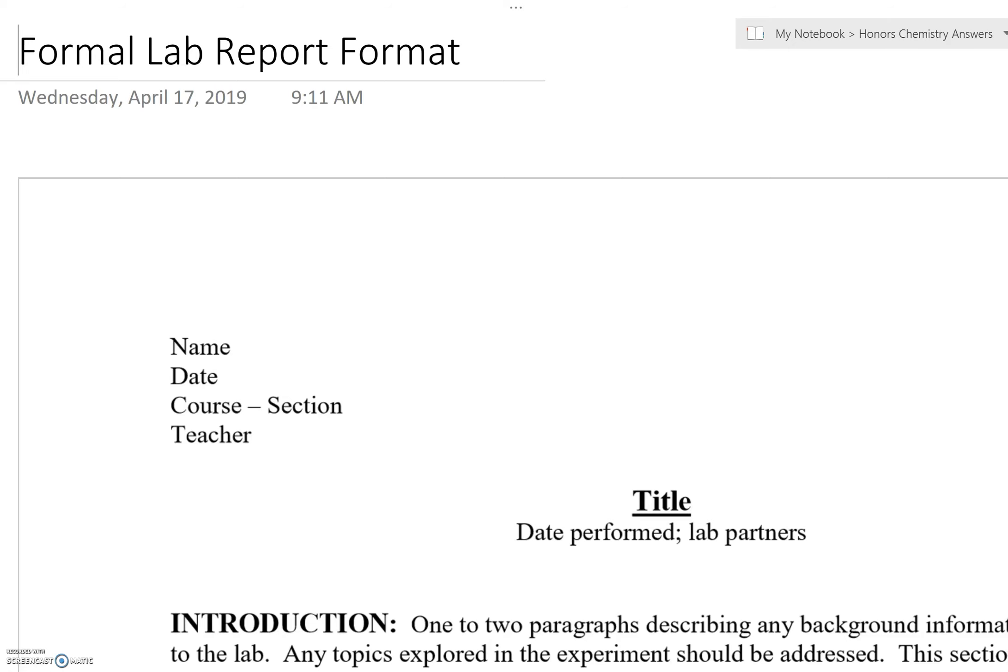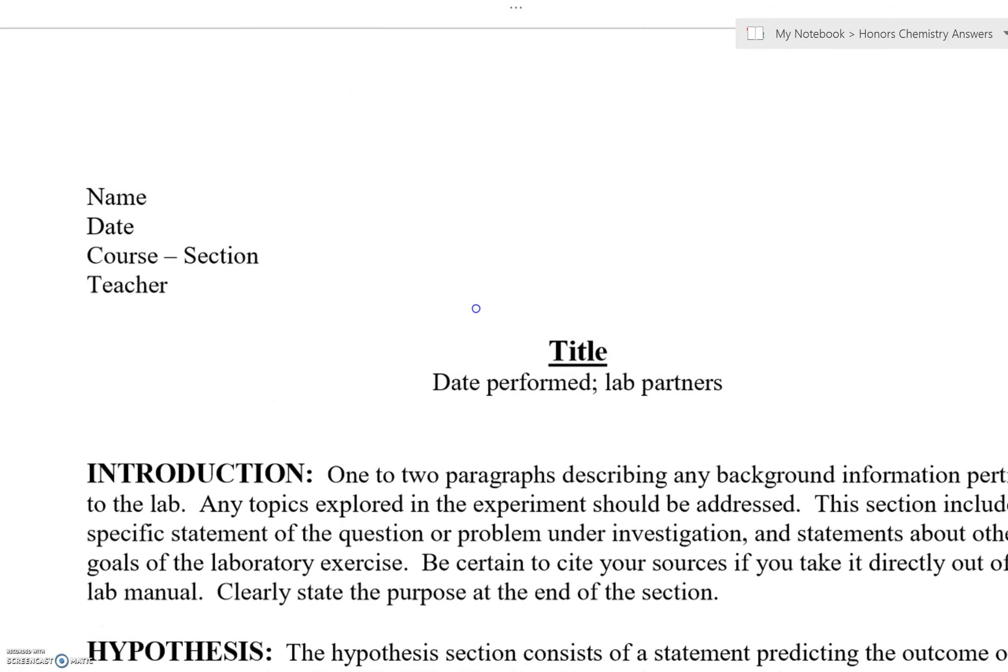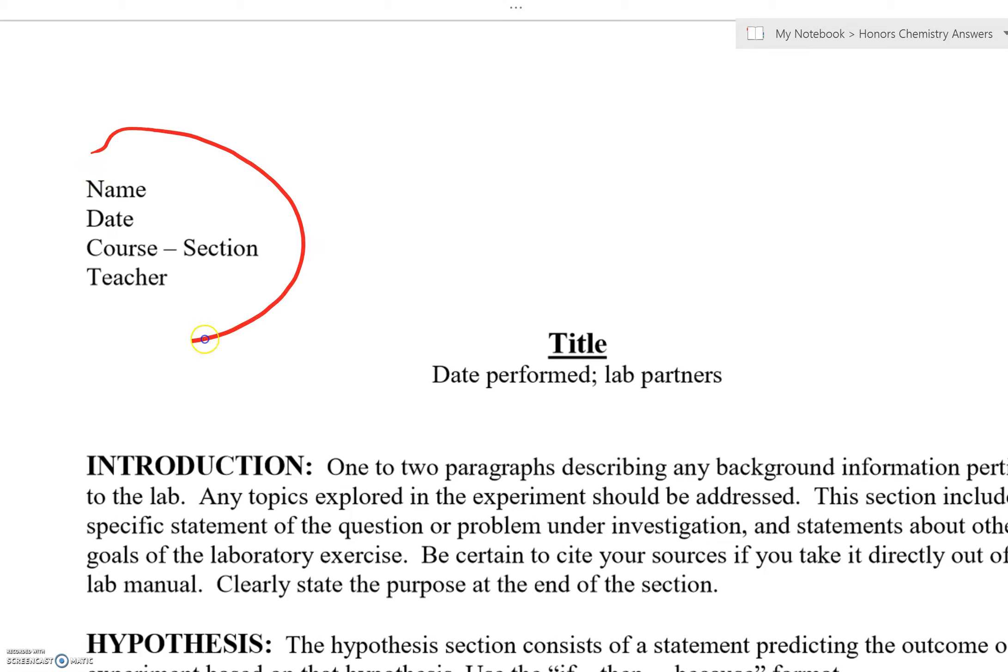Okay, so here's how this works. You're going to include a heading that should have your name, the date the lab was performed, and for different sections that will be different days. Whatever section you're in, this is of course honors chemistry, there are two sections, period three and period seven, and you know who that guy is.